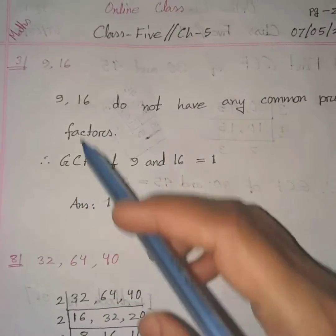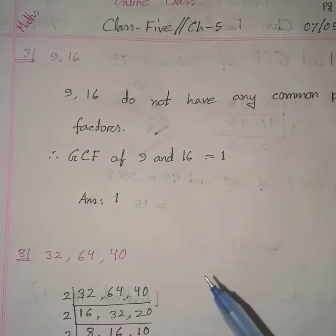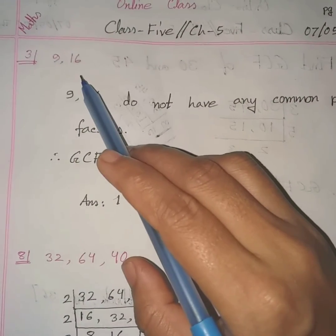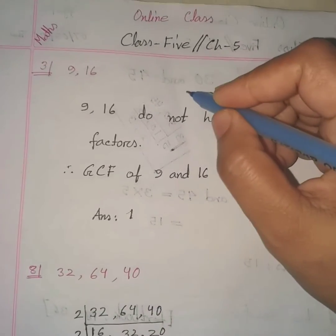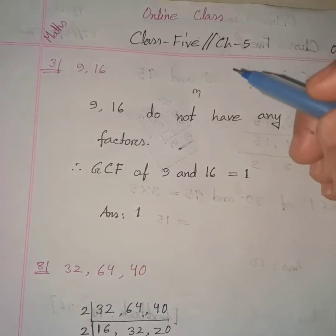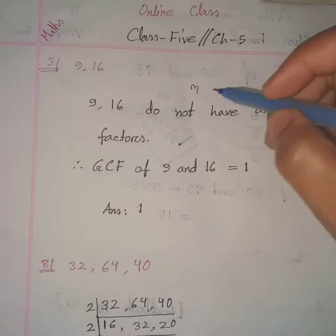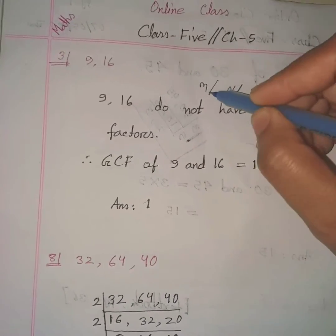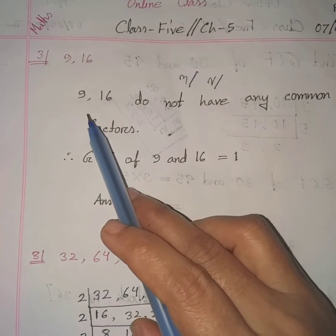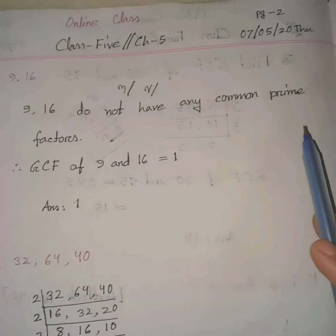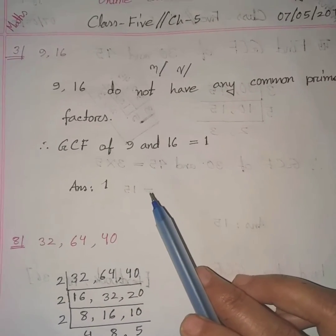Problem 3: find the GCF of 9 and 16. 9 is an odd number and 16 is an even number. The prime factor of 9 is 3, and the prime factor of 16 is only 2. There is not a single common prime factor of 9 and 16. Therefore GCF of 9 and 16 is 1.